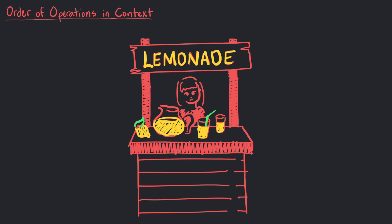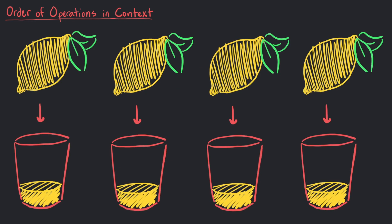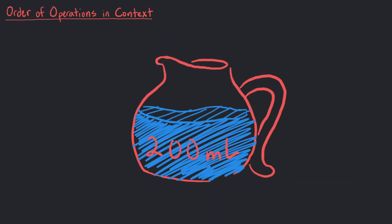Jenna is selling lemonade at her lemonade stand to earn money for the summer. Her recipe involves the juice of 4 lemons, and she knows that each lemon provides about 40 milliliters of juice. She also includes an additional 200 milliliters of water to dilute the lemon juice and a bit of sugar.